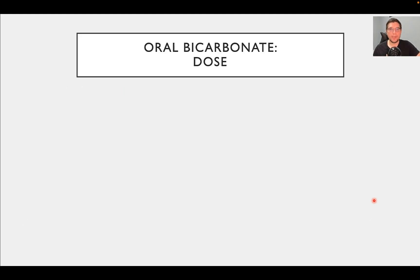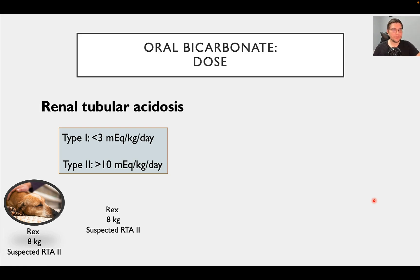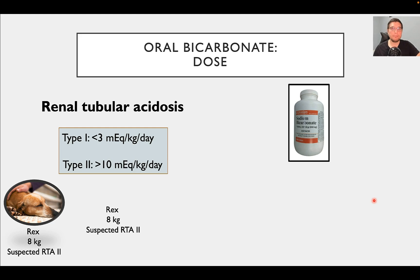Now we're going to talk about oral bicarbonate. It's not something we do all the time — there are rare cases that need it, and typically those cases are managed by internal medicine clinicians rather than ER or critical care. By far the most common indication for oral bicarb is renal tubular acidosis, such as type 1 or type 2 RTA. Going back to Rex, our 8-kilogram dachshund with suspected type 2 RTA secondary to pyelonephritis — this type of patient may potentially benefit from oral bicarbonate, especially if RTA persists despite initial acute management and the patient needs to go home with severe metabolic acidosis.